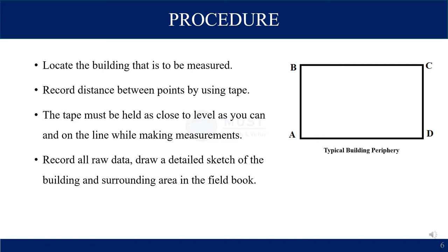For the general procedure, you will measure a building with corners labeled a, b, c, and d. You locate the building and measure the distances a-b, b-c, c-d, and d-a using the tape, then record the data in the field book.